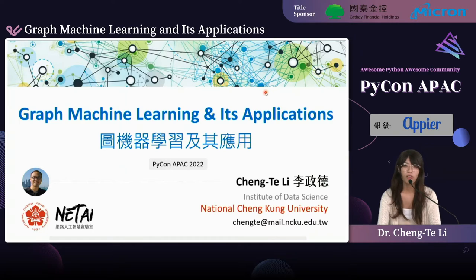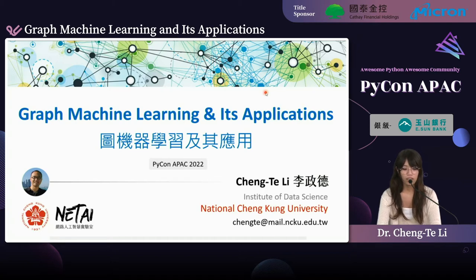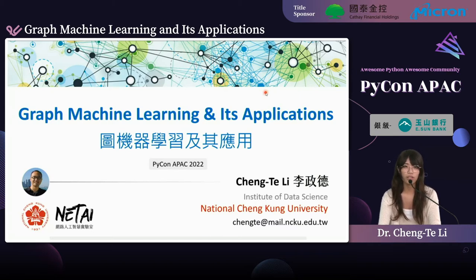Hello everyone, welcome to today's keynote speech. We invite Dr. Chandler Lee as our keynote speaker. The keynote topic is Graph Machine Learning and its Applications. Dr. Chandler Lee is an Associate Professor at the Institute of Data Science at National Tsinggong University. His research focuses on machine learning, data mining, and their applications to social networks and recommender systems.